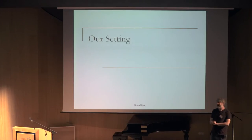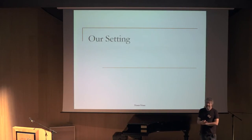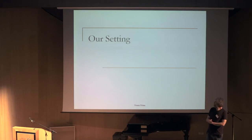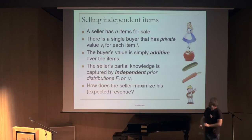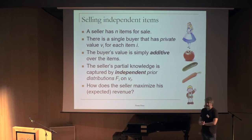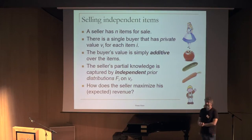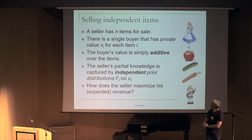The setting I want to talk about is probably the simplest scenario that really shows that complexity bites you. Every choice I make here tries to be as simple as possible. I'm going to have one seller and one buyer, and the seller is going to sell m items to the buyer.